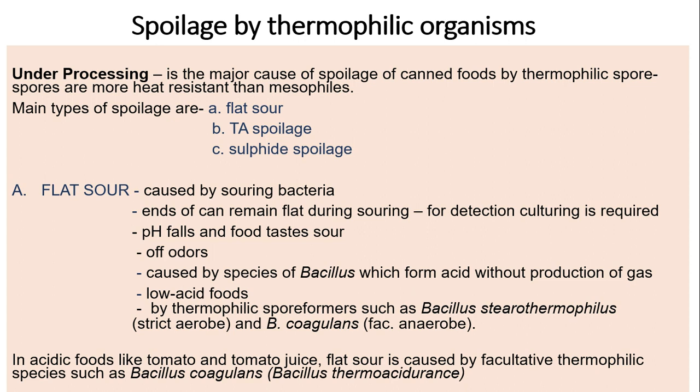Flat sour spoilage is caused by souring bacteria; the ends of the can remain flat during souring. For detection, culturing is required. The pH falls and food tastes sour. It is caused by species of Bacillus which form acid without production of gas. It affects low acid foods, caused by thermophilic spore formers such as Bacillus stearothermophilus, a strict aerobe, and facultative anaerobes like Bacillus coagulans.